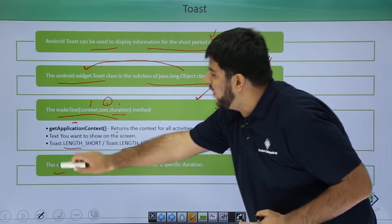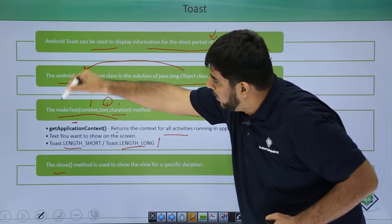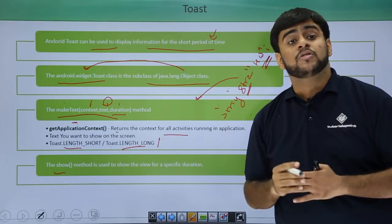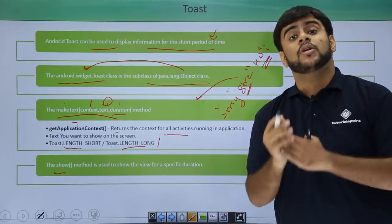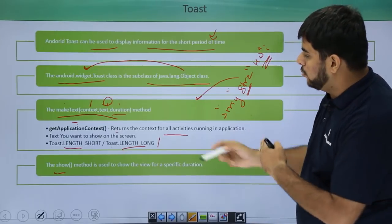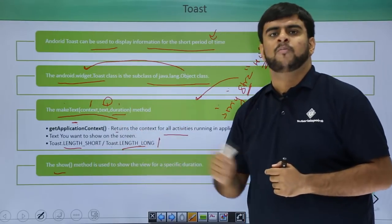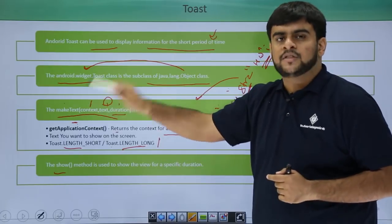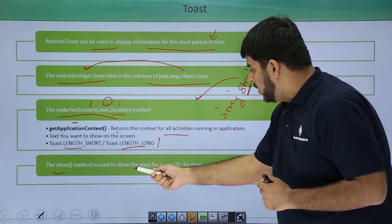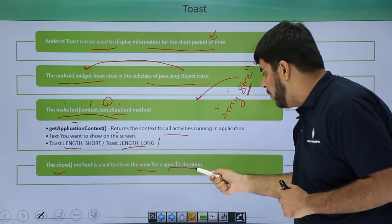The last is the show. Whatever we have created till now in this method has to be shown to the user. We show this thing to the user using the show method which is called on this toast and will show this view for a particular amount of time.